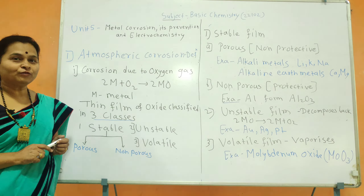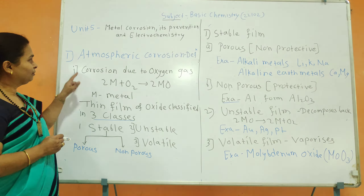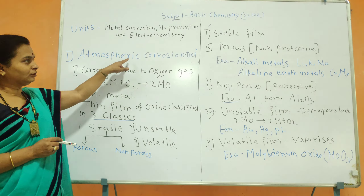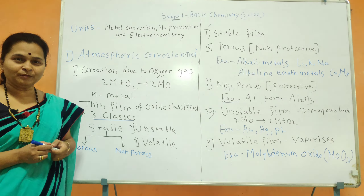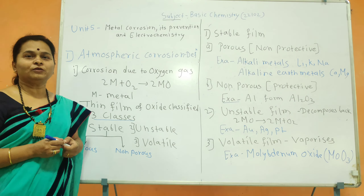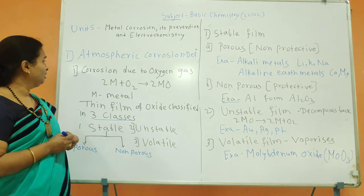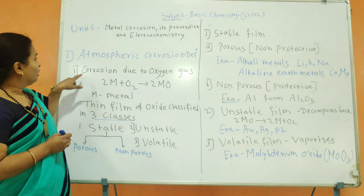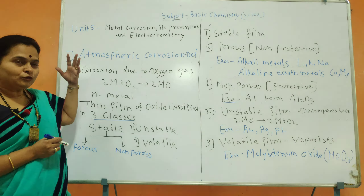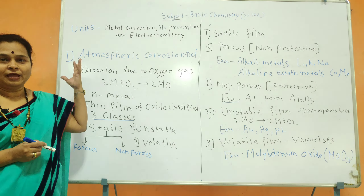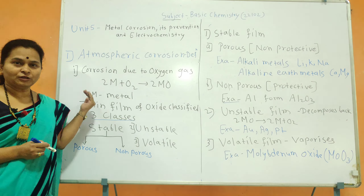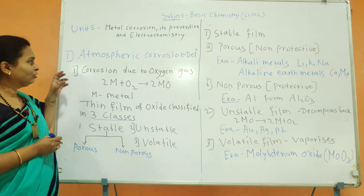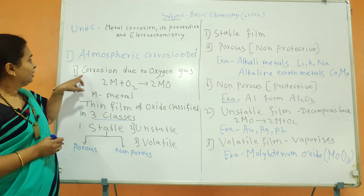Atmospheric corrosion is also known as direct chemical corrosion or dry corrosion. It is due to the action of gases of the surrounding medium on the metal.